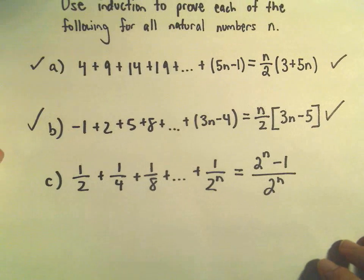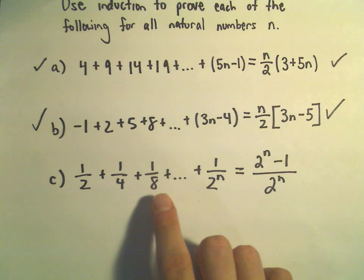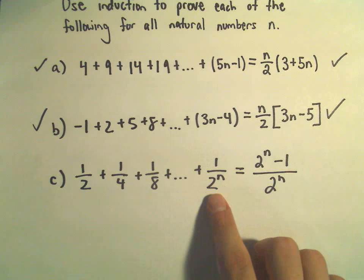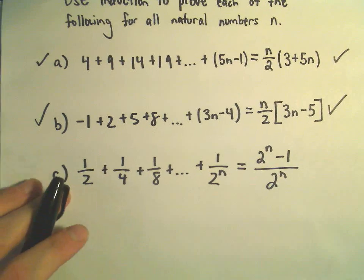Alright, one more example here of using induction. So here we're going to show that 1 half plus 1 fourth plus 1 eighth plus dot dot dot plus 1 over 2 to the n power, that's equal to 2 to the n minus 1 over 2 to the n.